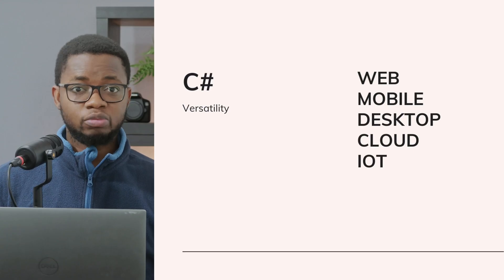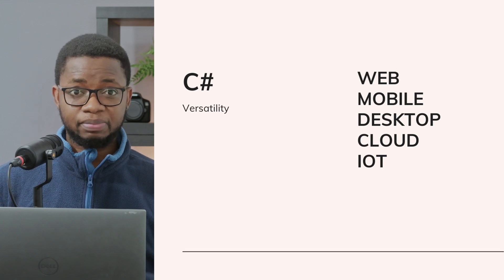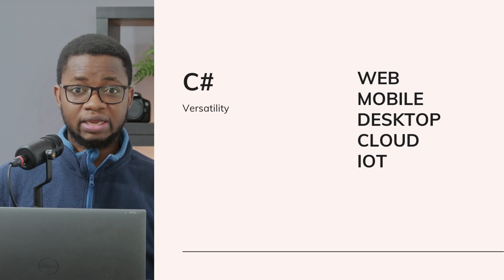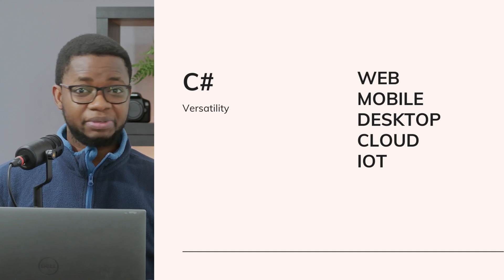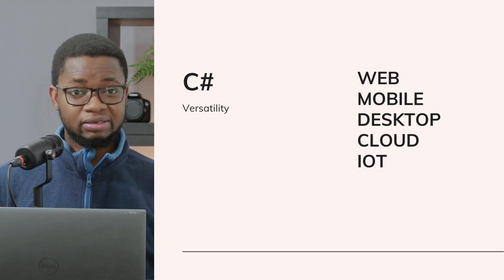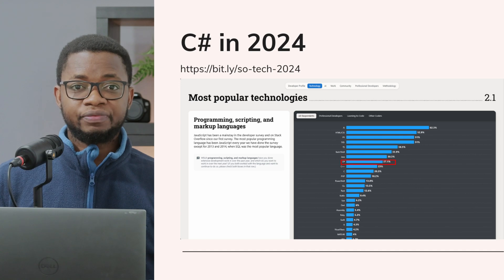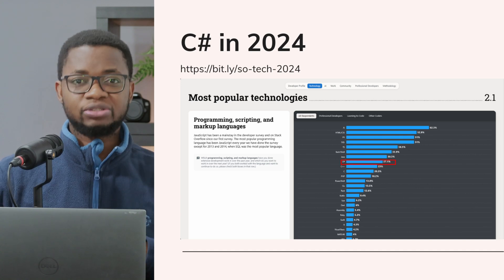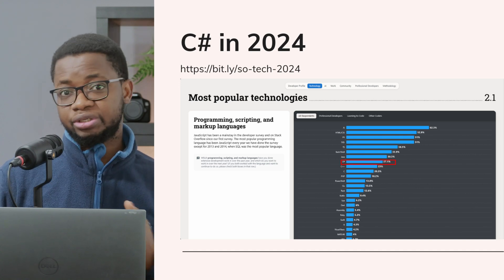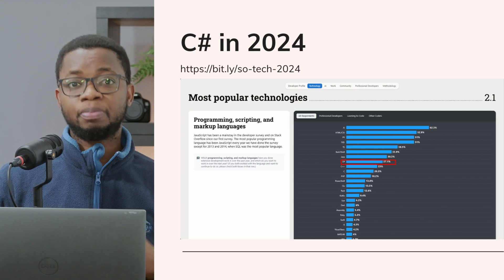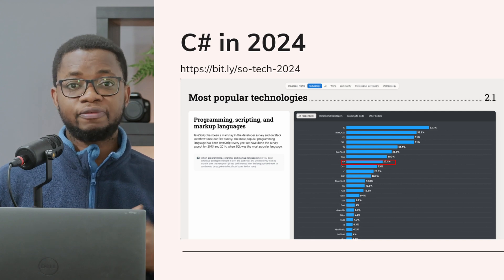C# is one of the most versatile and in-demand programming languages today. It is used for building web apps, mobile apps, games, desktop apps, and even cloud solutions. With tools like .NET and Visual Studio Code getting better every year, there's no better time to start learning. The Stack Overflow Developer Survey shows that 27% of developers use C#, and it came in as one of the top programming languages of 2024.